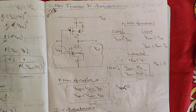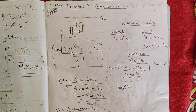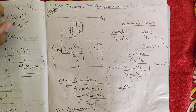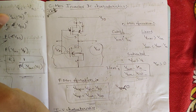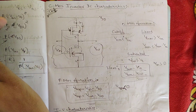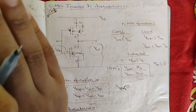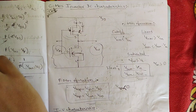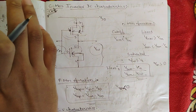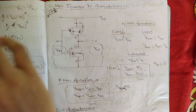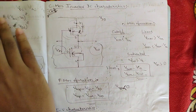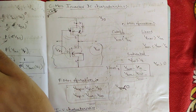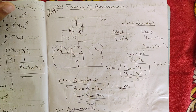We will discuss the CMOS inverter DC characteristics. We have considered one simple inverter — the inverter part is already covered, and I hope you know how a simple inverter looks. It is a representation of a NOT gate. In CMOS implementation, we use a simple inverter to convert from logic 0 to logic 1, or from logic 1 to logic 0.